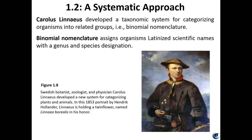Binomial nomenclature means you have a genus name and a species name together — that's the binomial part, and nomenclature is the name. Everything has a specific standardized scientific name in Latin that is the same no matter where you go or what language you speak. In English we say 'human being,' but in other languages it's different — that's the common name. The scientific name, however, is Homo sapiens everywhere, because it's a standardized scientific name.